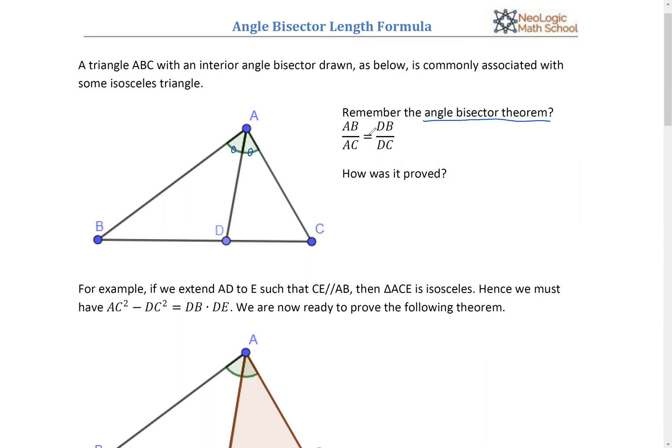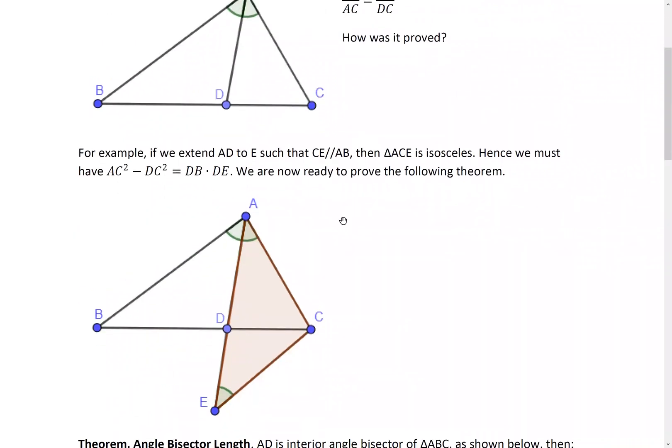And if you try to think how was that proved? One common way to do that is you add a parallel line. CE is parallel to AB. So you extend AD to a point E such that CE is parallel to AB. Now this angle equals this angle because of the parallel, CE parallel to AB. But then this angle also equals this because AD is angle bisector.